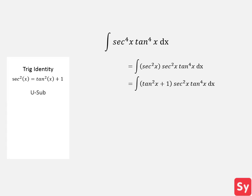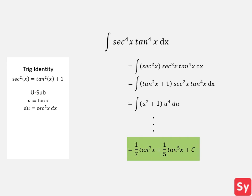Now we can use u-substitution to solve the rest of the integral. We'll set u equal to tangent of x and du equal to secant squared of x dx. We substitute u and du into the integrand and we get the integral of the sum of u squared plus one times u to the fourth du. After using the power rule, we'll get one seventh times tangent of x to the seventh plus one fifth times tangent of x to the fifth plus C.